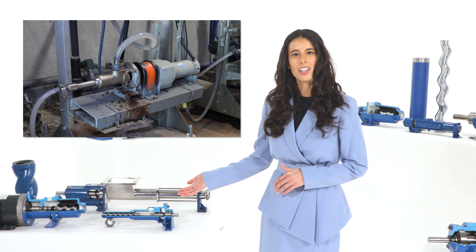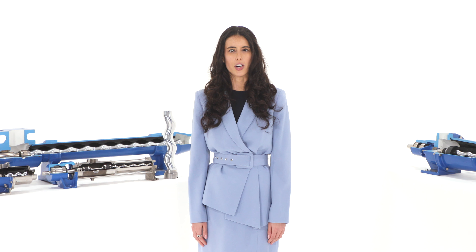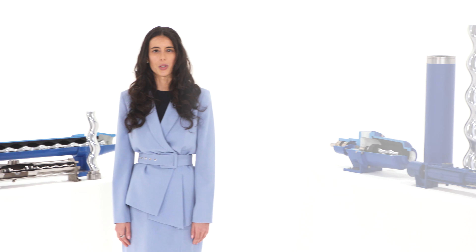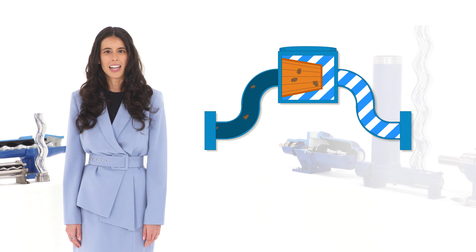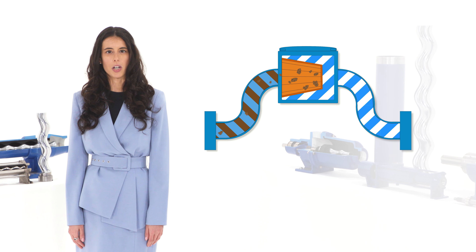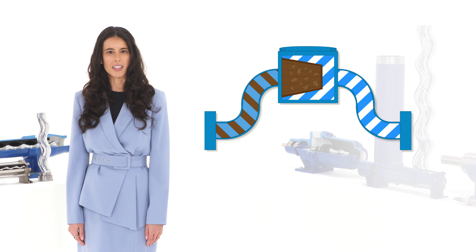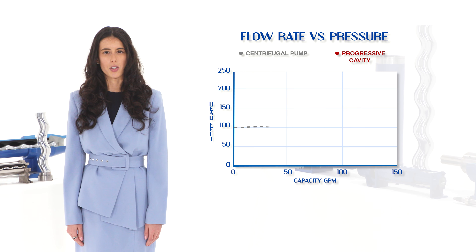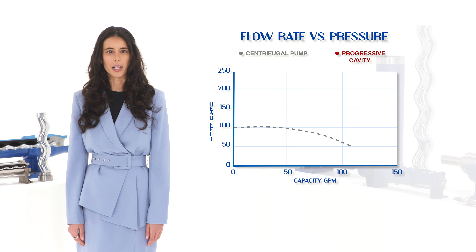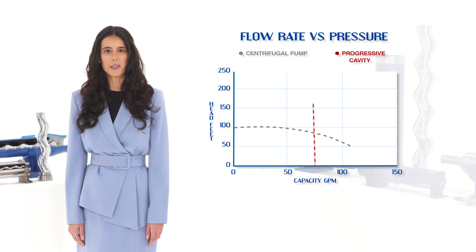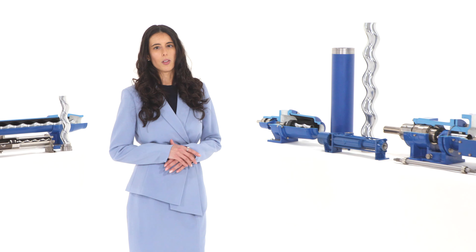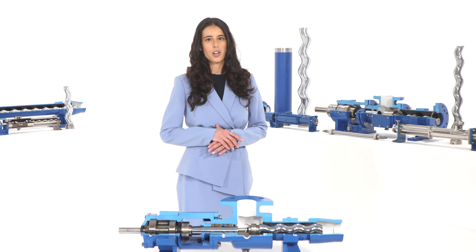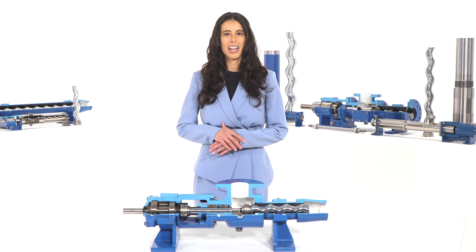Constant flow with varying discharge pressures. Progressive cavity pumps are also ideal for pumping applications where the discharge pressures vary, such as pumping into a filter to remove solids from a liquid. As the filter loads, the discharge pressures the pump must work against increases. Other types of pumps have an inherent difficulty pumping against varying discharge pressures, and some will even stop working. But not the progressive cavity pump! A PC pump will have the same flow regardless of varying discharge pressures and will continue to pump as long as required.